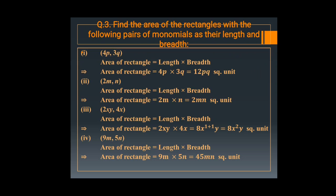In the next, the sides are 2m and n. Area of rectangle equals length into breadth: 2m into n equals 2mn square units. In the third question, sides are 2xy and 4x. We multiply: 2 into 4 is 8, x power is 1 plus 1, and y remains once. So the area is 8x square y square units.